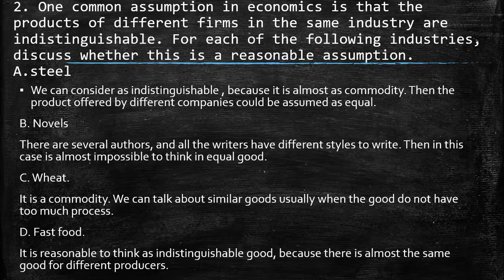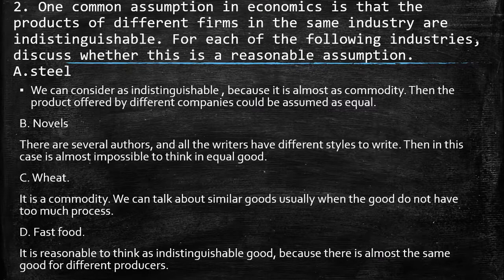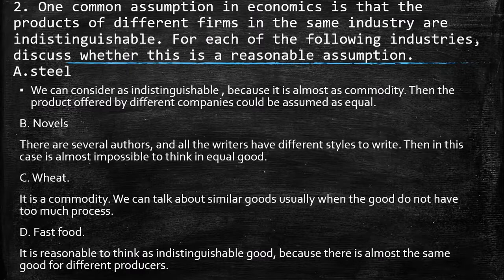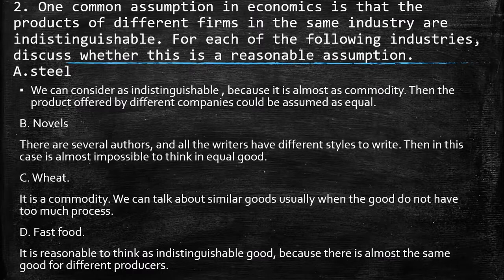For fast food, it's reasonable to think of it as an indistinguishable good. Because when we are talking about buying a hamburger in general, we can say that we are buying or eating the same good from different producers. So we can say it is like an indistinguishable good.